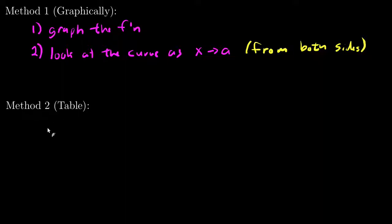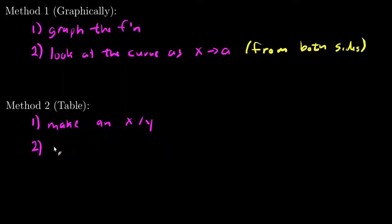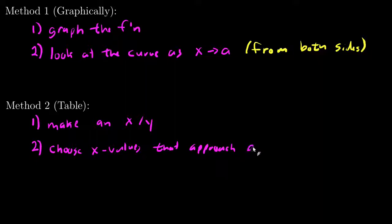A different method is to make a table — an input-output table for the function. In that table, we need to choose X values that approach A from both sides, some being larger than A and some smaller. The important part is showing that it squeezes in as we get closer and closer to A.